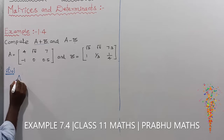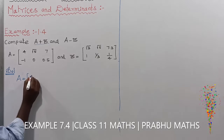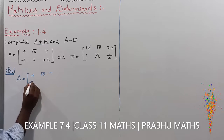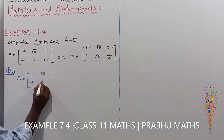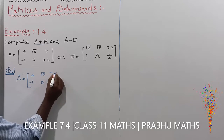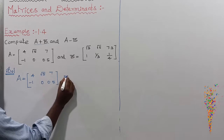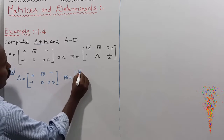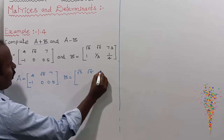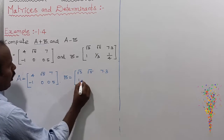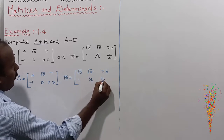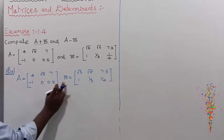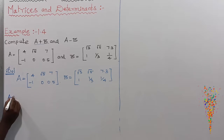The given A matrix is equal to [[4, √5, 7], [-1, 0, 0.5]]. The B matrix is equal to [[√3, √5, 7.3], [1, 1/3, 1/4]]. Now we find A plus B.